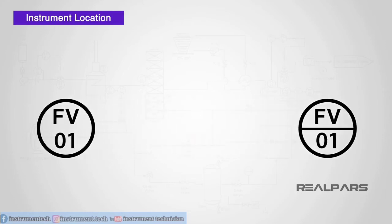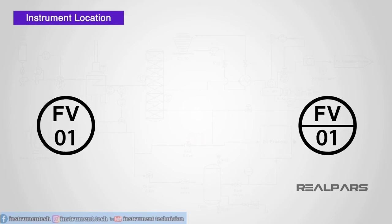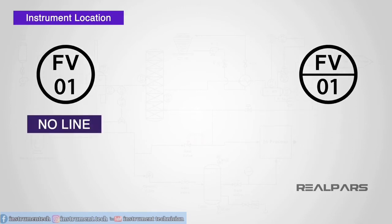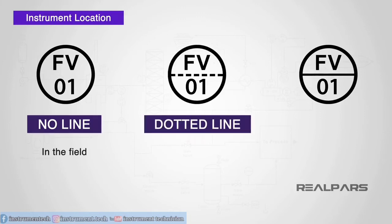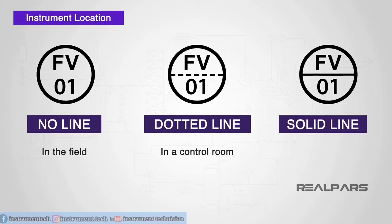The presence or absence of a line in the circle determines the location of the physical device. Let's take a look at how these are commonly represented. No line: the instrument is located in the field near the process and operator. Dotted line: the instrument is located in a control room, accessible to the operator. Solid line: the instrument is not directly accessible.